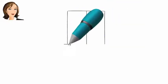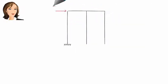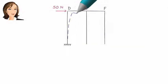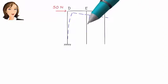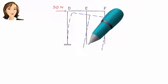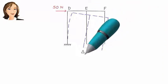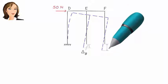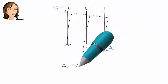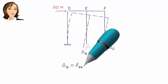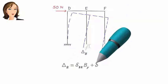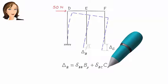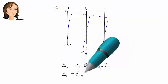After removing the redundant forces, the frame is going to deform like this. We refer to the vertical displacement at B as delta B and the vertical displacement at C as delta C. Then we can write the compatibility equations this way.